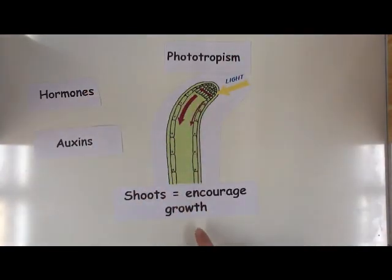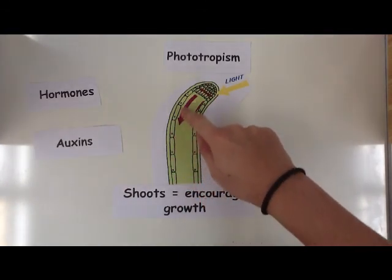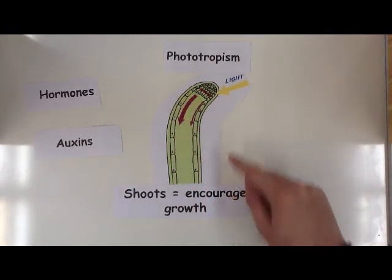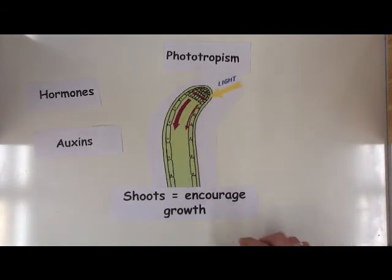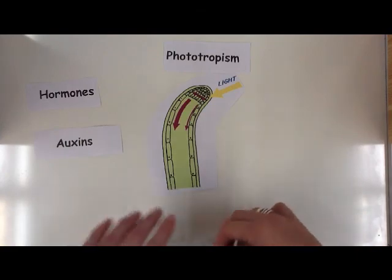It includes a hormone, auxin, and what we know is that the more we have of auxin in a particular area, this encourages growth. The less we have, it's just going to literally slow down the growth. And as a result, it's going to bend in towards the light. So that's the first thing we need to know.